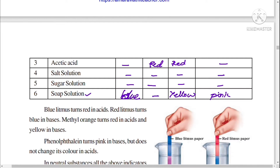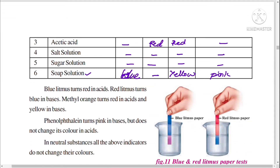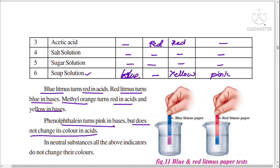From the table, we concluded that blue litmus turns red in acids, red litmus turns blue in bases, methyl orange turns red in acids and yellow in bases, and phenolphthalein turns pink in bases but does not change its color in acids. Thank you for watching this video. Please like my video, share it with your friends, subscribe to my channel, and click on the bell icon.